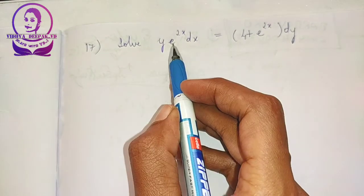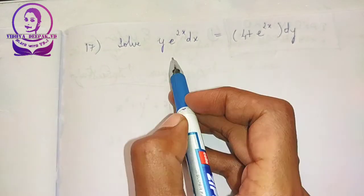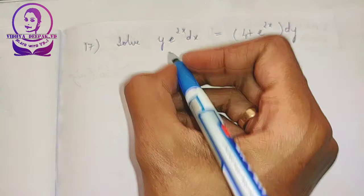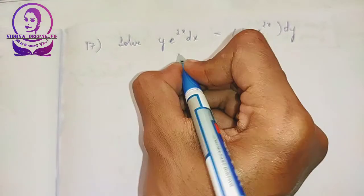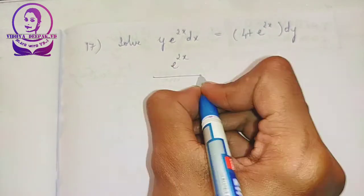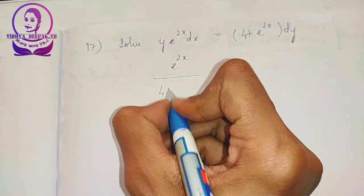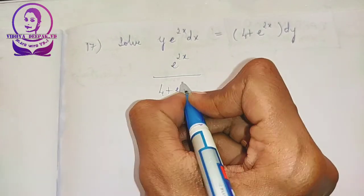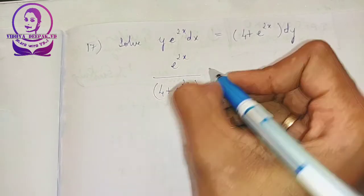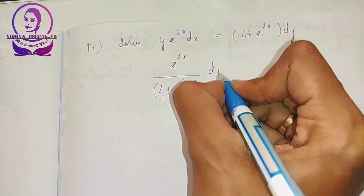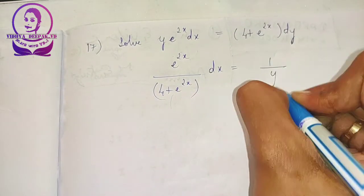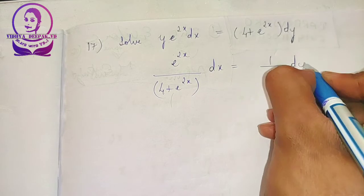I will bring the x terms together and the y term together. This becomes e to the power of 2x divided by 4 plus e to the power of 2x dx is equal to 1 by y dy.